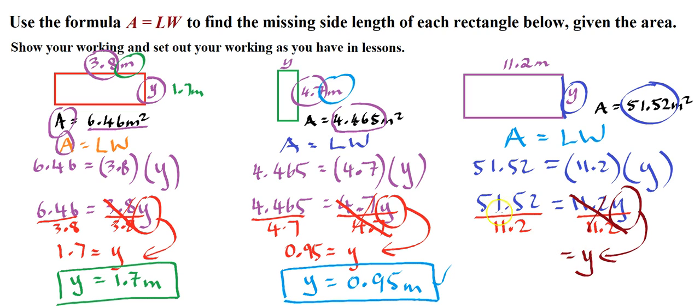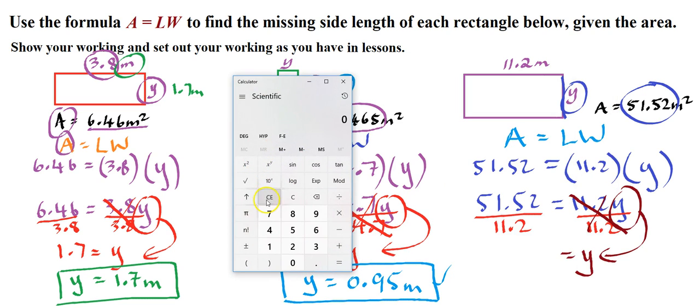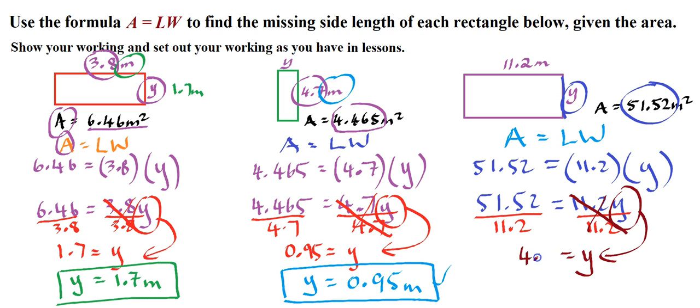So, and on the left-hand side, we have to solve 51.52 divided by 11.2. So, we need our calculator. So let's use our calculator. Let's clear that. So what is it? 51.52 divided by 11.2. And the value of that is 4.6. So let's write 4.6. And for formatting sake, we really should have the variable on the left and its value on the right.